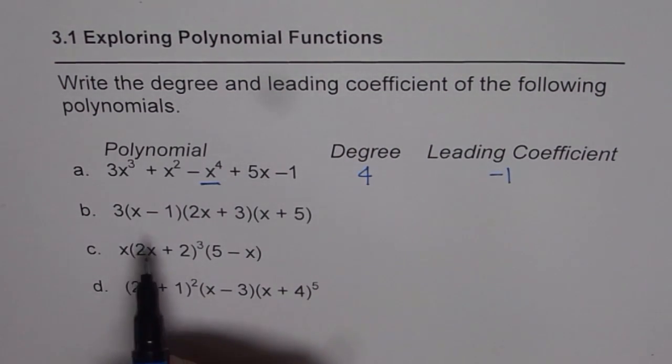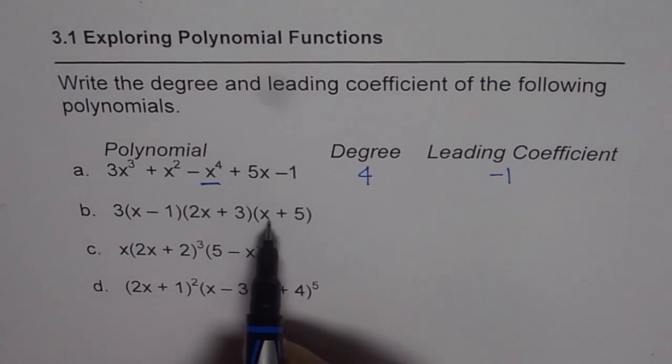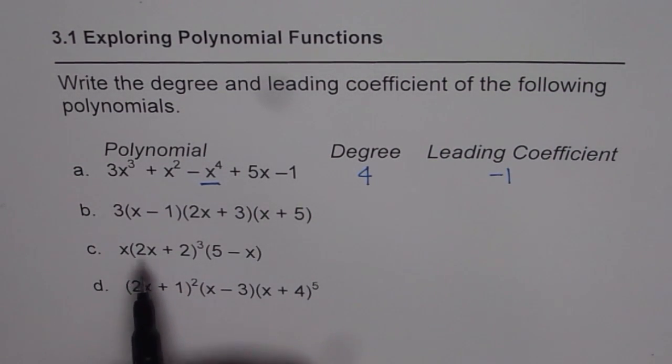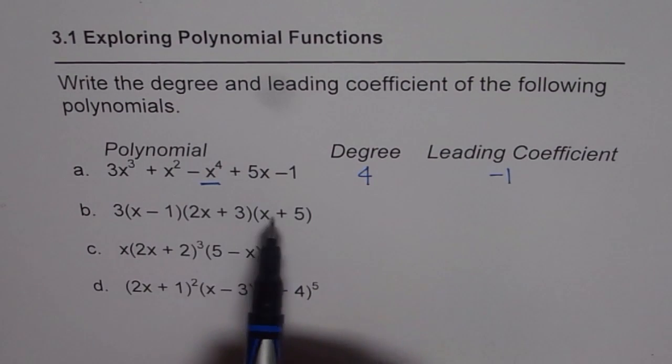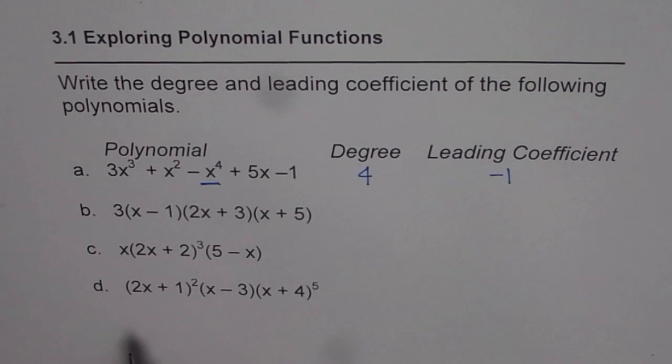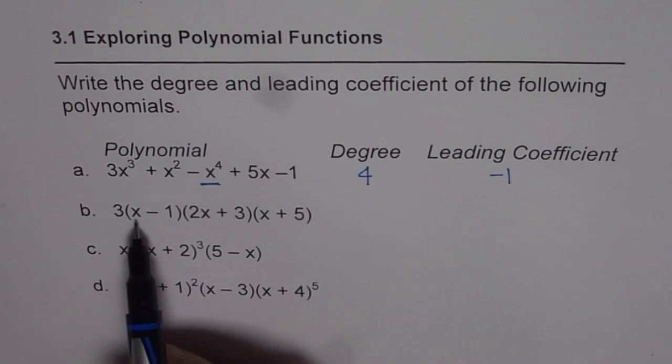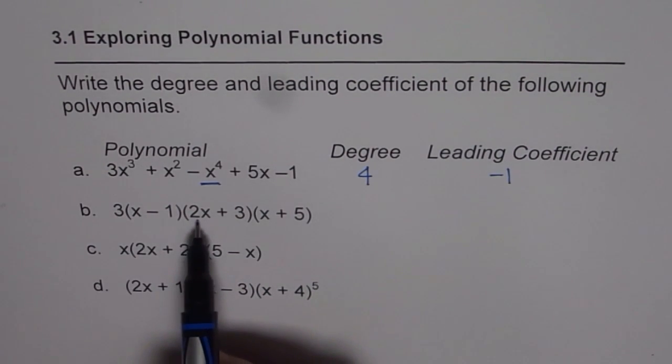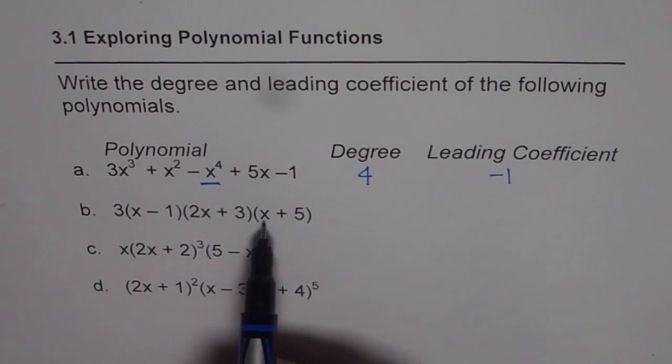The second one is we have given the polynomial in factored form. Now, you do not really have to multiply, expand, get to this stage and then find the answer. You should remember, if you multiply x with 2x, you are going to get 2x square. 2x square times x will give you 2x cube.